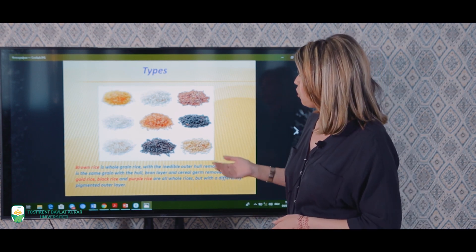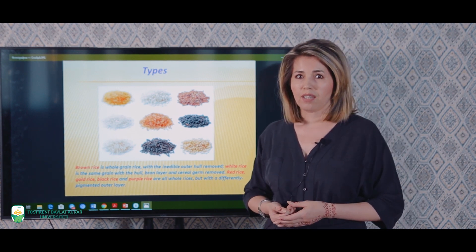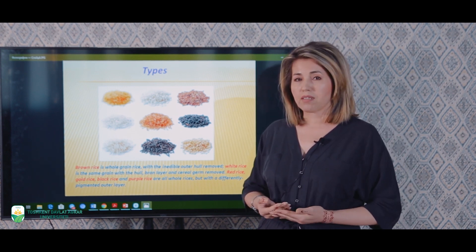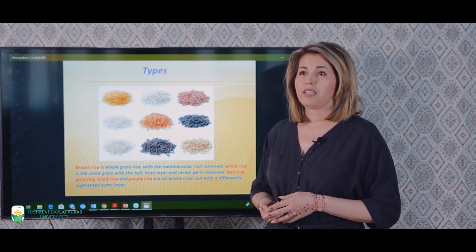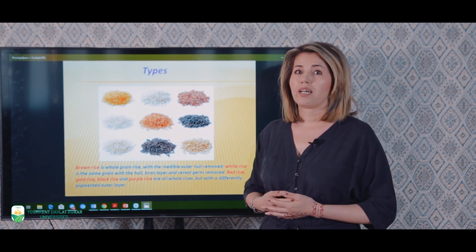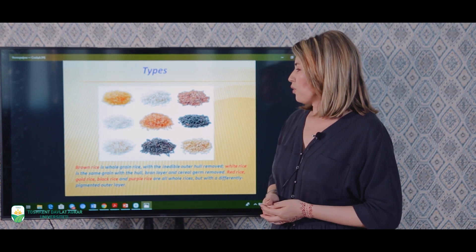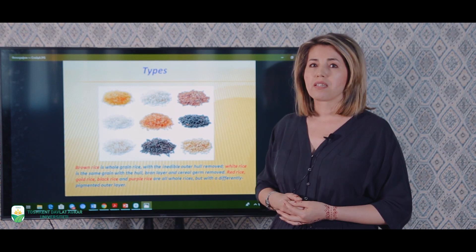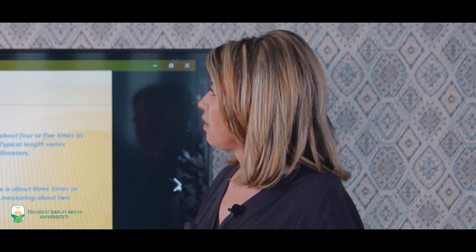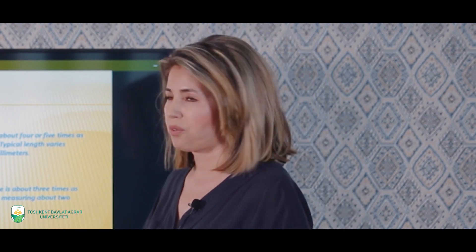Demak ki shuali guruchining turlarini rangiga qarab ko'ramiz. Biz siz bilan uni oq va jigarrang ranglarini bilamiz — bozorlarimizda va magazinlarimizda xarid qilamiz. Lekin shuali guruchining dunyoda boshqa ranglari ham bor — qizil, toʻq sariq, qora va siyohrang. Bu shuali guruchining tashqi qobig'ining pigmentatsiyasi bilan belgilanadi. If we say rice from the point of shape, we can differentiate it into long grain, medium grain and short grain.